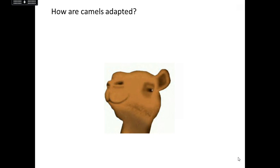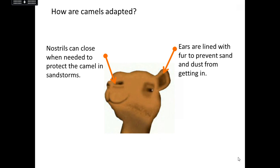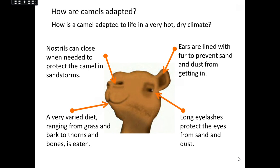Zooming in on the camel's face, they can actually close their nostrils. If there's a big sandstorm, the nostrils close and stop sand from getting in and irritating the lungs. Similarly, the ears are lined with fur — they don't close, but the fur stops sand and dust from getting in. The long eyelashes are there to protect the eyes from sand falling in during sandstorms. And a camel can pretty much eat anything — it's got a really tough tongue so it can eat things like thorns from cacti, or even bones from animals that have died in the desert, getting as many nutrients as needed.